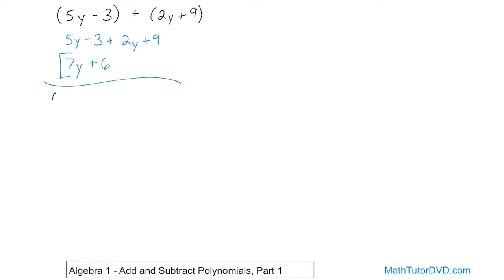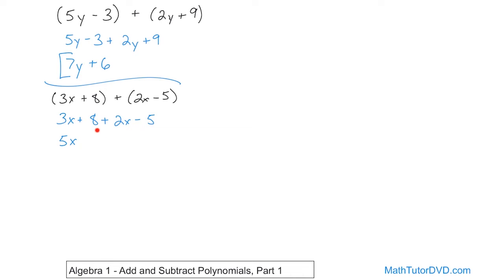To take another example, what if we had 3x plus 8, and we're adding to it 2x minus 5? Same sort of thing — you can mentally drop the parentheses or write it all out. We're able to drop them because there's nothing to do inside. So write it as 3x plus 8 plus 2x minus 5. You have 3x's and 2x's — they're both positive, so add them: 3 plus 2 is 5, giving you 5x. Then you have 8 and negative 5, which you can read as 8 minus 5 — that's simply 3. The answer is 5x plus 3.